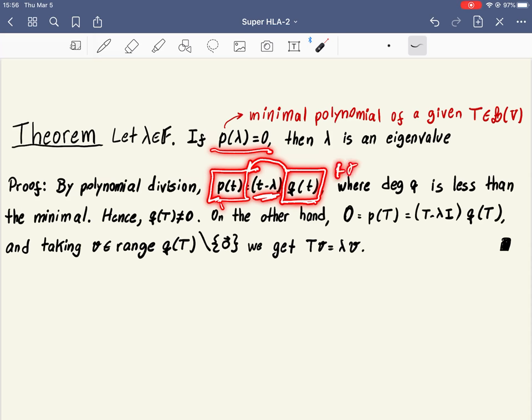Plus some remainder, but then the remainder, we know it has to have degree zero, so it's constant, and the constant has to be zero, because p of lambda equals zero. So this division here, p divided by t minus lambda is exact if and only if lambda is a root. So we can write p as a product of this term, plus q times q of t, q of t has degree less than the minimal degree.